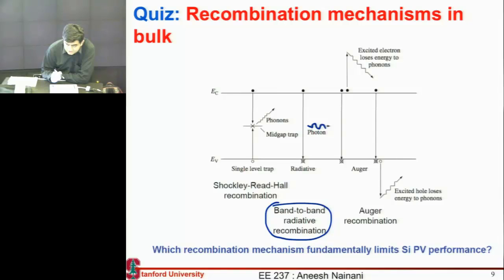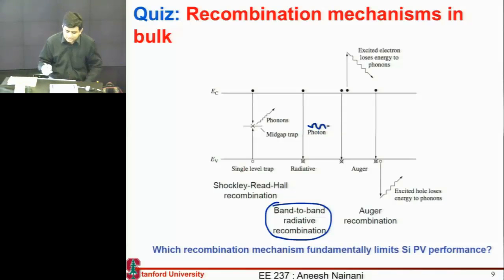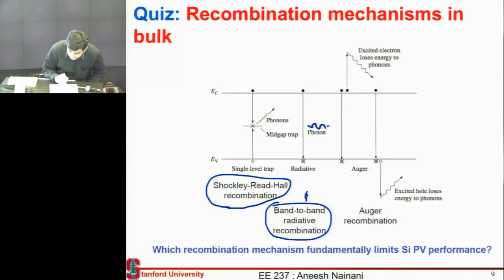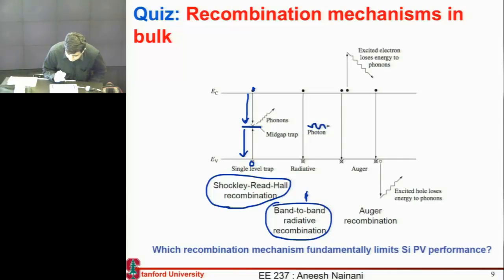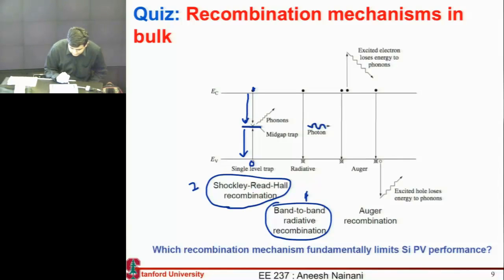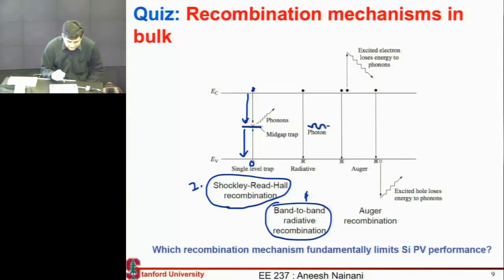Band-to-band recombination is inherent to the cell. Anything which has to absorb light, by the principle of blackbody radiation, also has to emit light, so this process has to occur. The other recombination mechanism happens with the help of traps — you have an electron and a hole, and they recombine using a trap level. This is called Shockley-Read-Hall recombination, named after the three people who defined the statistics and formula for it.